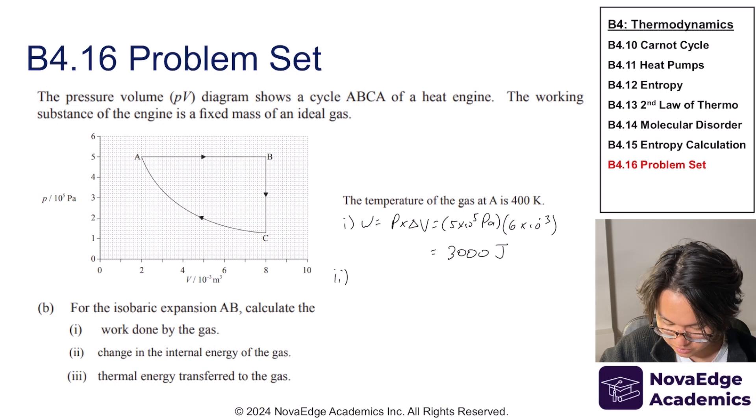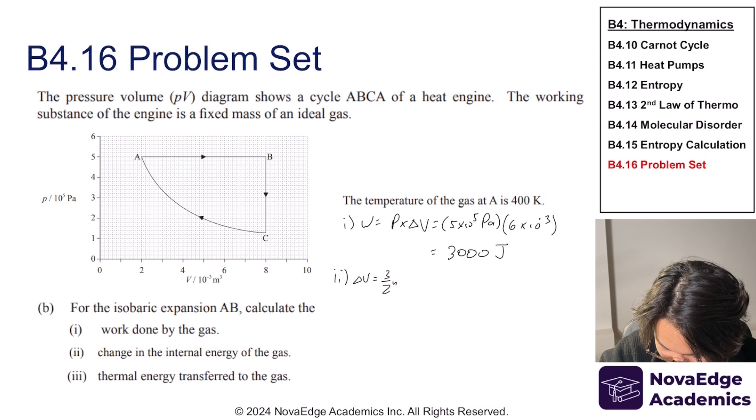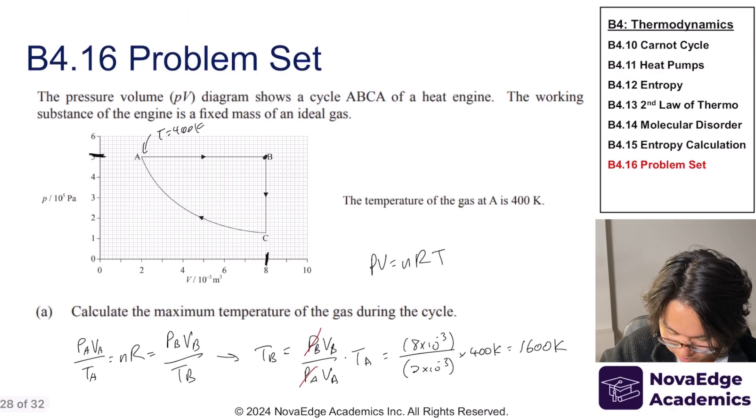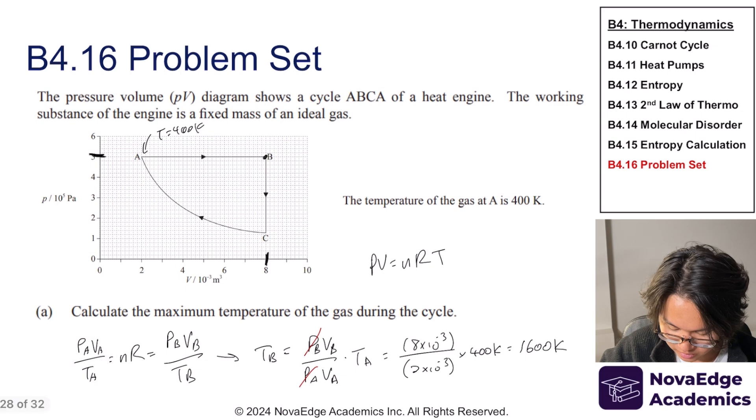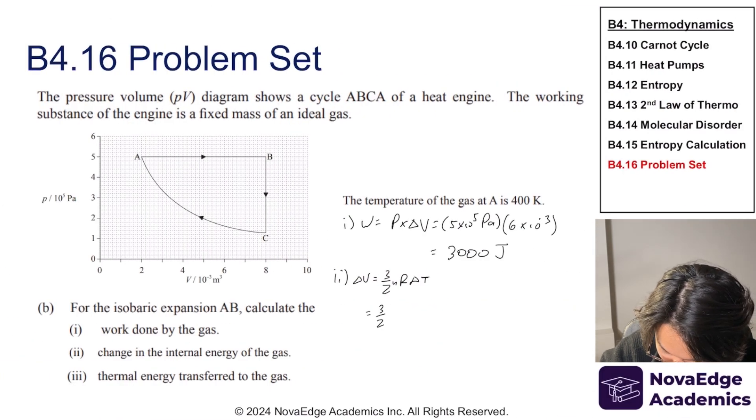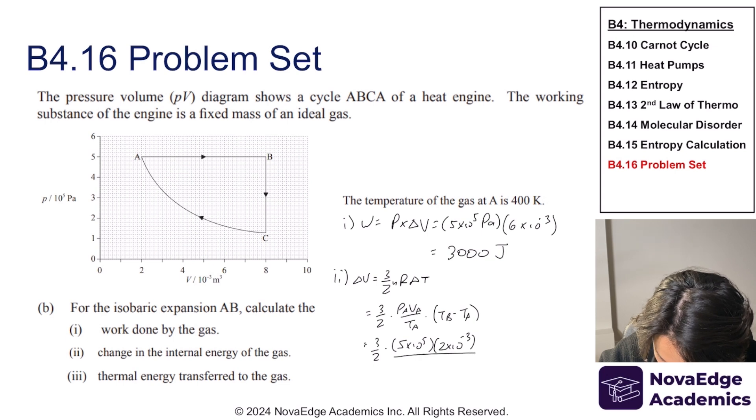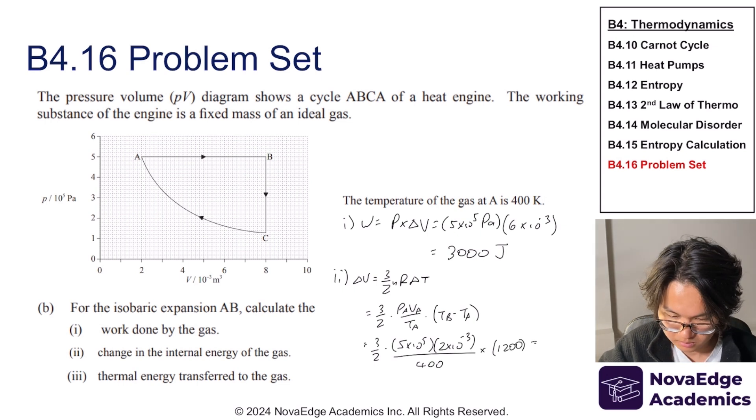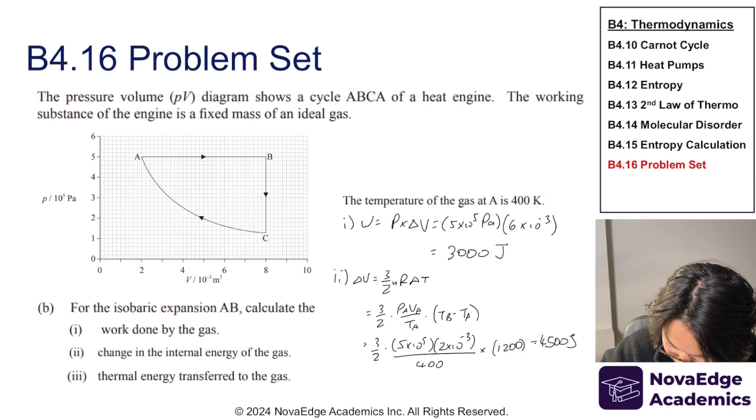For two, change in internal energy of the gas. Well, we know the change in energy, internal energy is given by 3/2 NR delta T. And while we specifically didn't calculate NR in part A, we get this expression, right? P_A V_A over T_A is equal to NR. So I can just plug that in instead. So that's going to be 3/2 times P_A V_A over T_A times it by delta T. So that's T_B minus T_A. Plugging in these values, I get 4,500 joules.